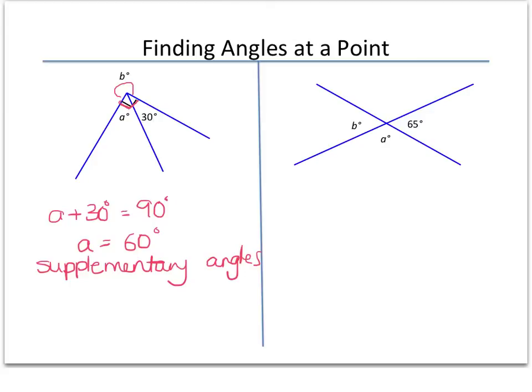Second angle there is B, and you can see that A and 30 degrees and B need to make a whole revolution. So that whole circle there. So B is going to be 360 degrees, a whole revolution, minus A and 30. Well, we know A is 60, so minus 90 degrees. So B is equal to 270 degrees. And that's because we have angles that make a revolution.